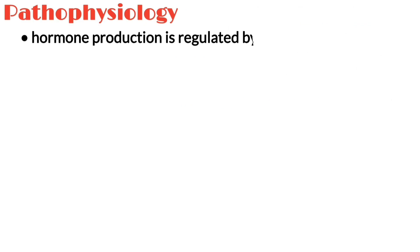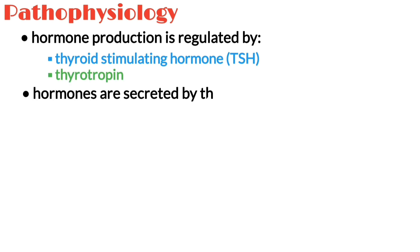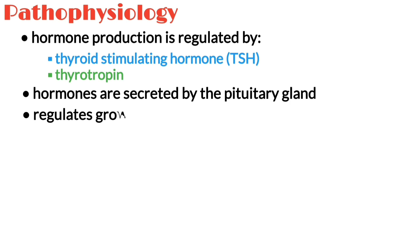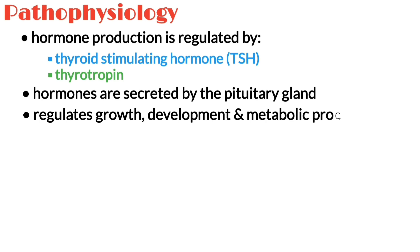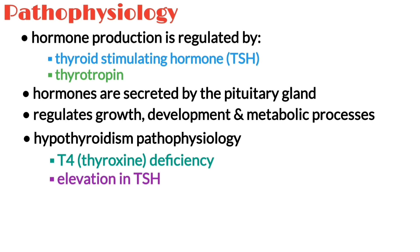Thyroid hormone production is regulated by thyroid stimulating hormone, TSH, and thyrotropin. Both hormones are secreted by the pituitary gland, which is located in the brain and regulates growth, development, and various metabolic processes. In hypothyroidism, there is a deficiency in T4 and consequently an elevation in TSH.